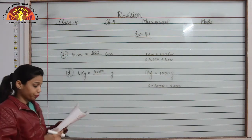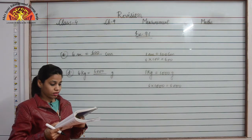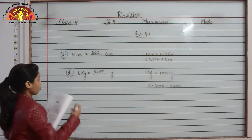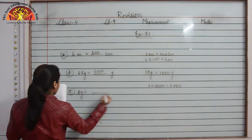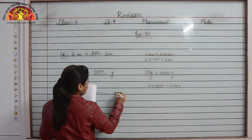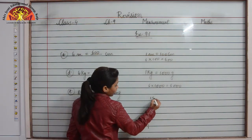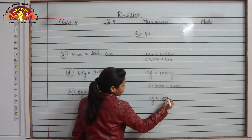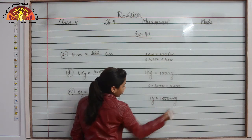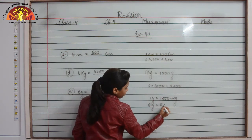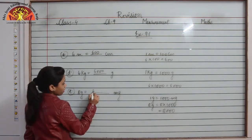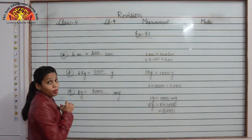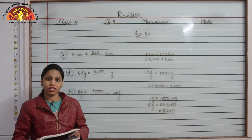Now part e: 8 gram is equal to dash milligram. As you all know, 1 gram is equal to 1000 milligram, therefore 8 gram will be 8 multiplied by 1000, which is 8000. Hence 8 gram will be 8000 milligram. This is how you have to do the rest of the questions of exercise 9.1.